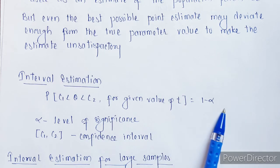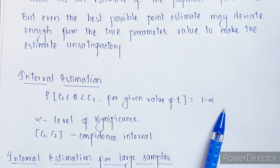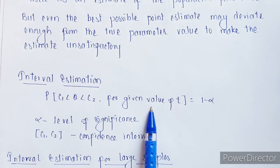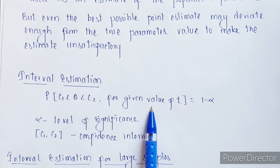And this alpha is called as a level of significance. To what extent it is significant, the value whatever we are finding, to what extent that value is going to be significant.